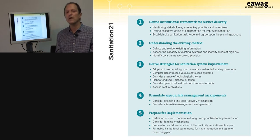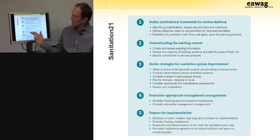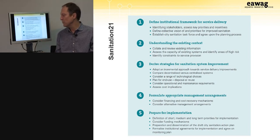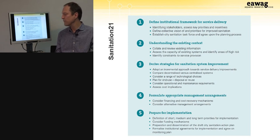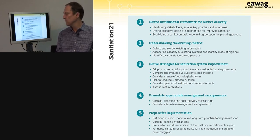It's also important to look at cost implications to stay as realistic as possible. In step four, we formulate appropriate management arrangements, considering financial and cost recovery mechanisms and alternative management arrangements. In step five, preparing for implementation, we define the city sanitation action plan with short, medium, and long-term priorities for implementation.